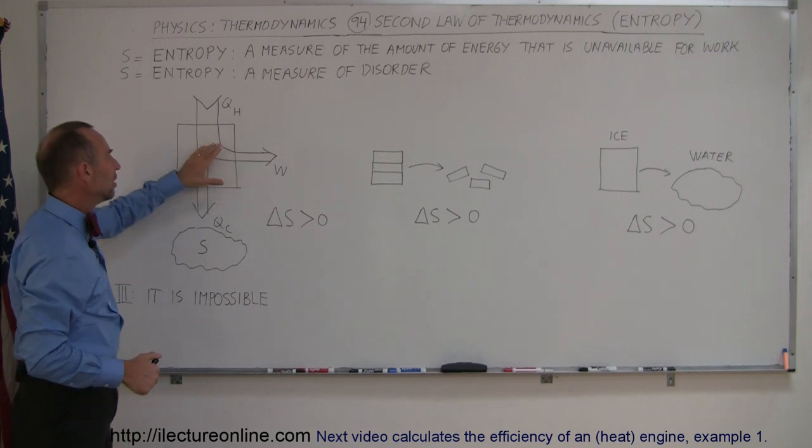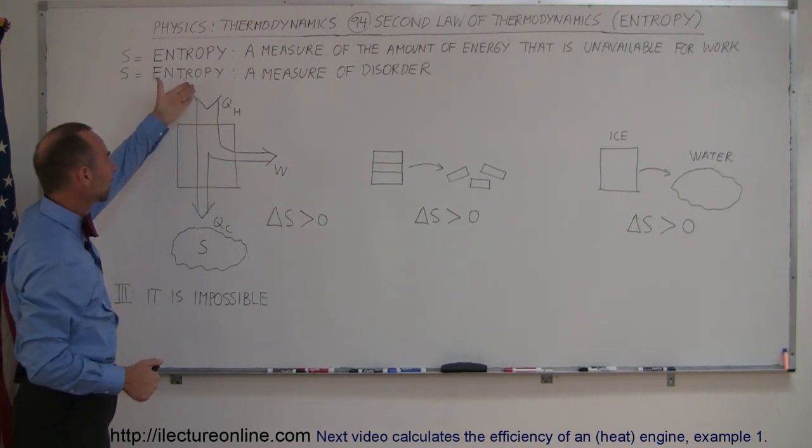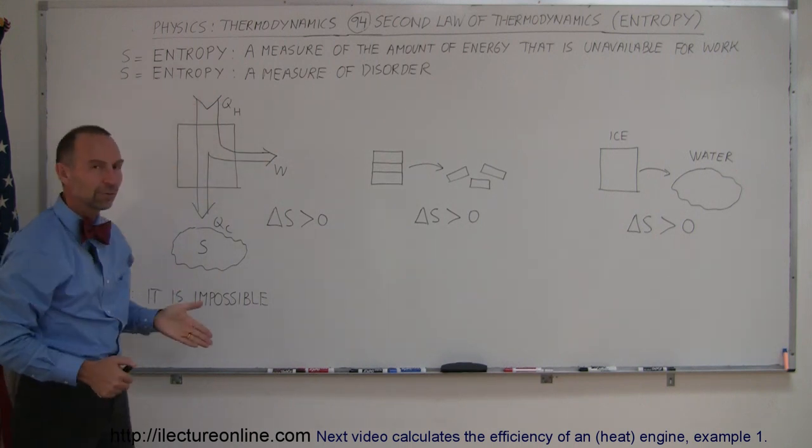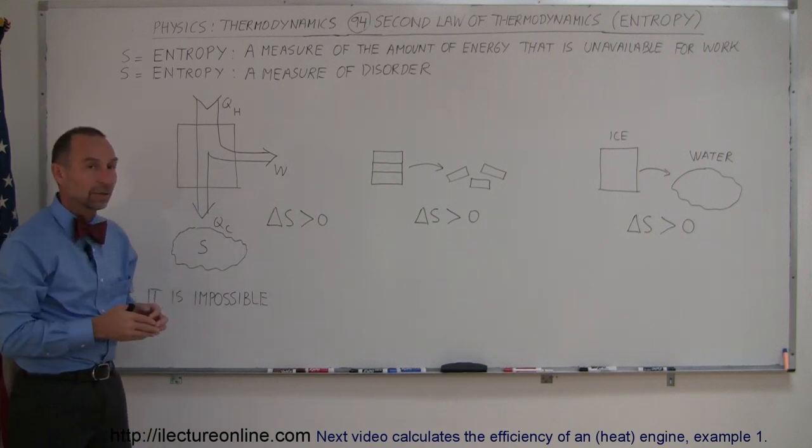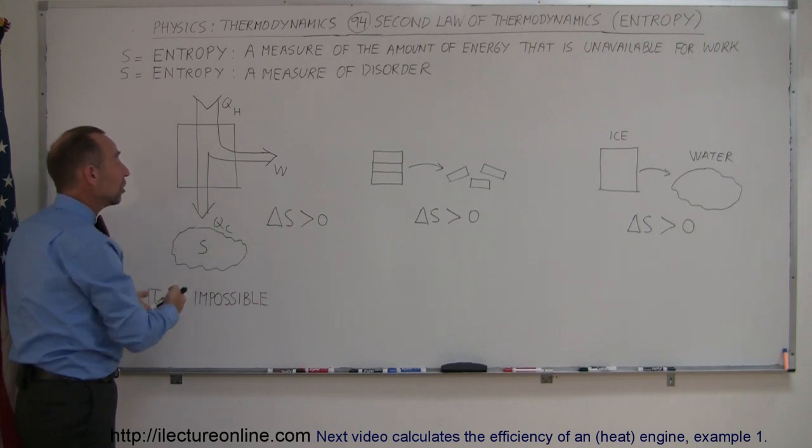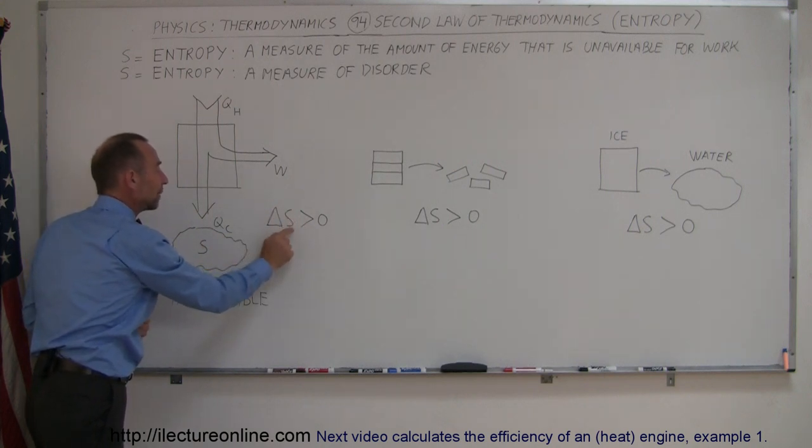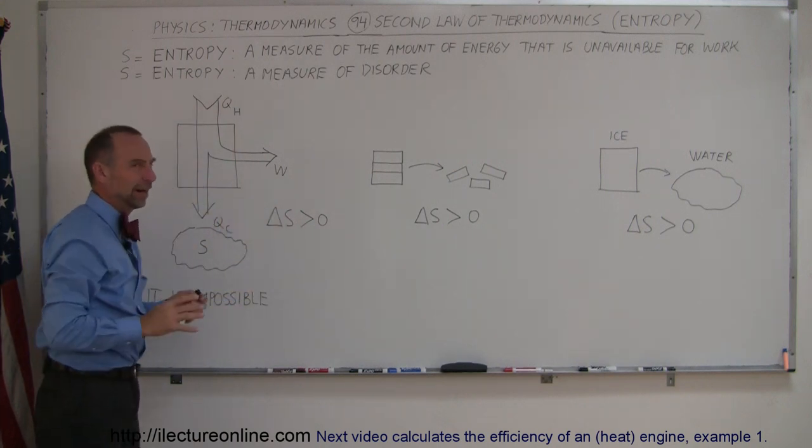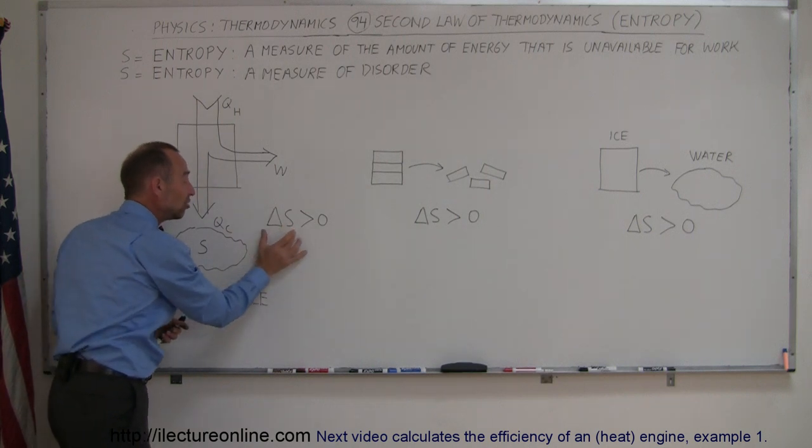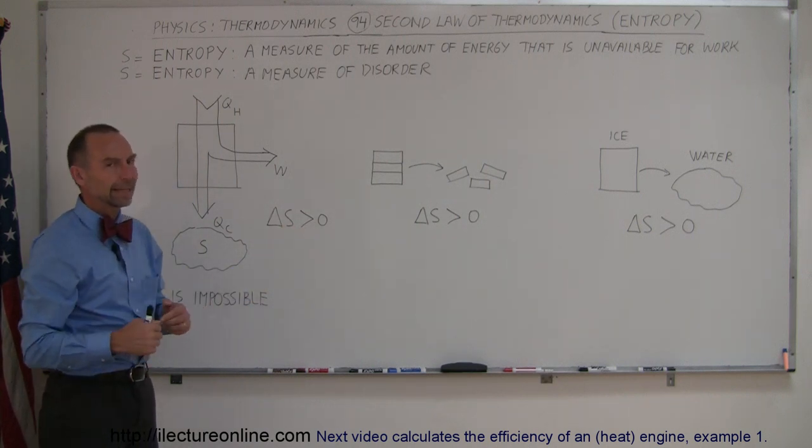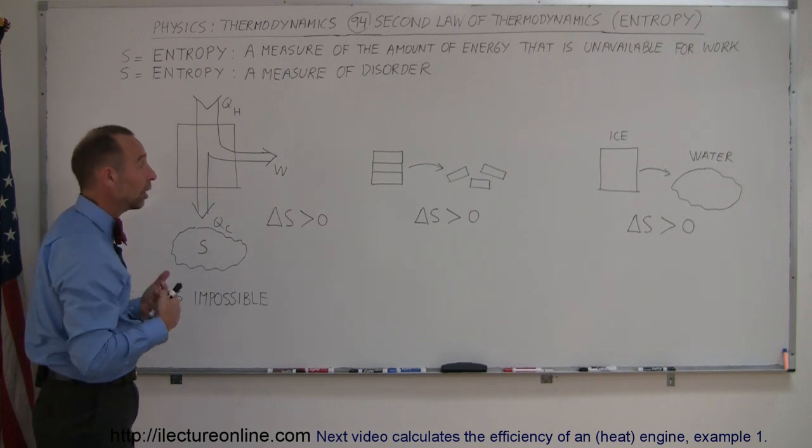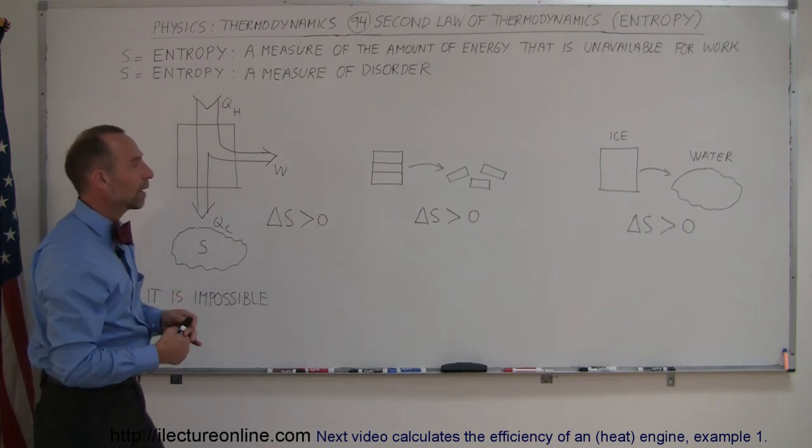So because doing work with a heat engine requires heat to flow from a hot to cold reservoir, more and more heat ends up in the cold reservoir, therefore more and more energy unavailable to do work with. So therefore, the entropy, S, we use the letter S for entropy, I don't know why, but there it is. And so, the change in entropy is always going to be positive. Again, that's the amount of energy unavailable for work.